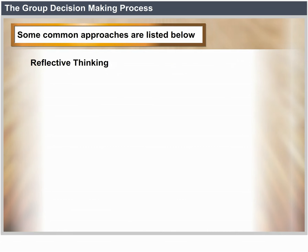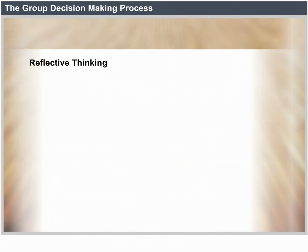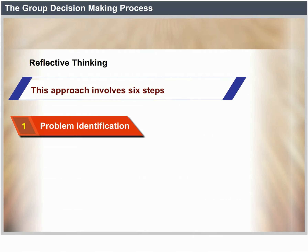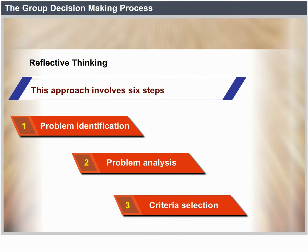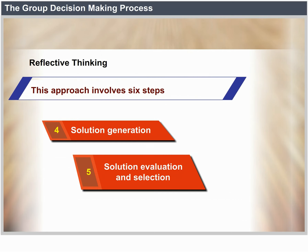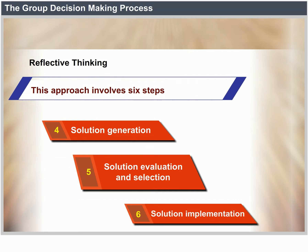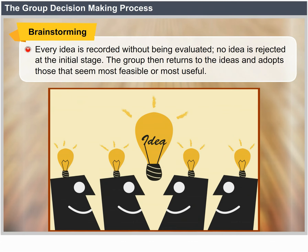Some common approaches include: Reflective Thinking, developed by John Dewey — a careful systematic approach to problem solving involving six steps: 1) problem identification, 2) problem analysis, 3) criteria selection, 4) solution generation, 5) solution evaluation and selection, and 6) solution implementation. Brainstorming — members generate as many ideas about a topic as they can, every idea is recorded without being evaluated, no idea is rejected at the initial stage, and the group then returns to the ideas and adopts those that seem most feasible or most useful. Nominal Group Technique — a group decision-making tool used to rank a set of options where members individually list all options, rank them from lowest to highest priority, and the facilitator computes an average score to determine the group's highest priority.